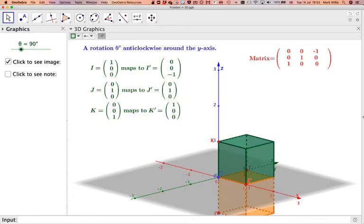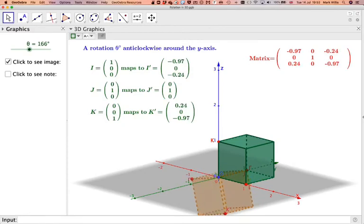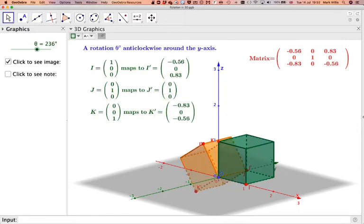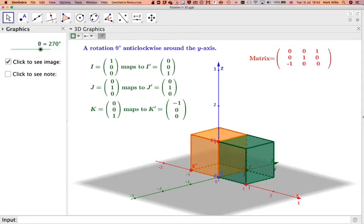Obviously another interesting one would be to do 180 degrees. Which is that one there. That gives you the matrix for that transformation. Okay, and 270. Which gives you that one there.